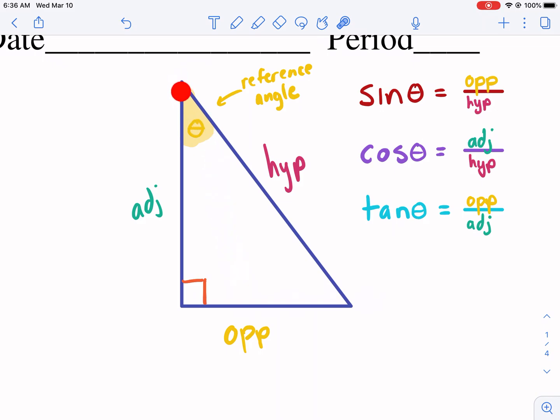Then we have the adjacent side. The adjacent side touches the reference angle. It's adjacent to it, meaning touching it. So that is our adjacent side. Our adjacent side always forms one part, one side of the angle.